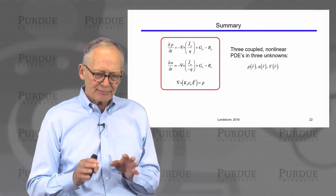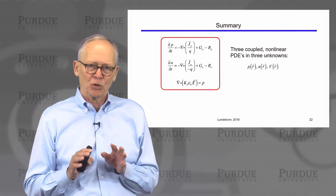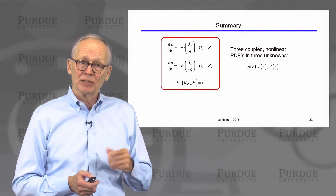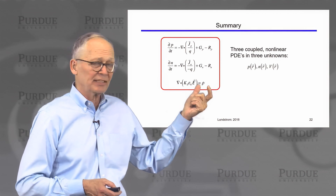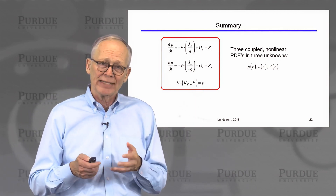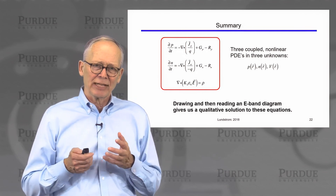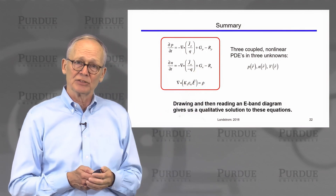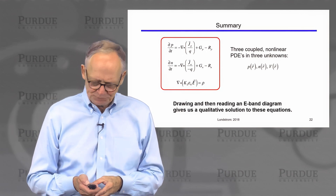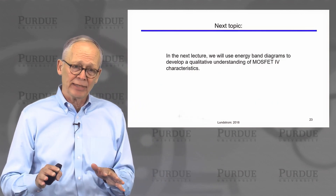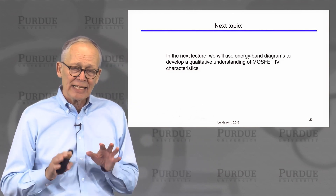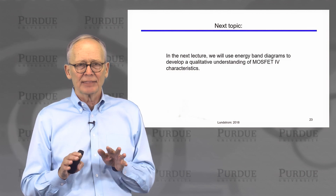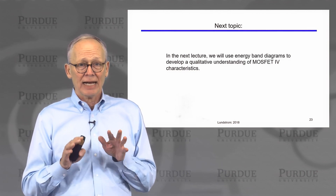To summarize, energy band diagrams are very useful for providing a qualitative solution to the semiconductor equations. If we want numerical answers, we would solve the continuity equations for electrons and holes self-consistently with the Poisson equation. But energy band diagrams are a remarkably simple way to get qualitative insight into what the solutions to these equations look like. With that review of energy band diagrams, in the next lecture we will draw energy band diagrams of MOSFETs and find that this is a very simple, very physical way to understand how MOSFETs operate.